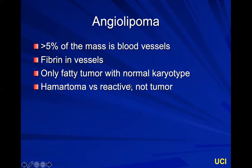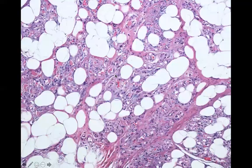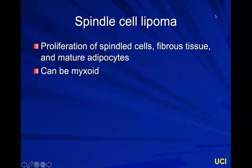An angiolipoma is when greater than five percent of the mass is composed of blood vessels, and often you'll see fibrin in the vessel walls. It can be painful. This is the only fatty tumor with a normal karyotype — it's thought to be hamartomatous or reactive, but not truly a tumor. Here you can see it's much more cellular, and between the areas of normal adipocytes you'll see increased blood vessels. Some are filled with blood and some with fibrin.